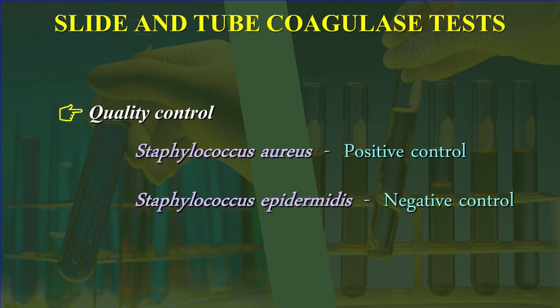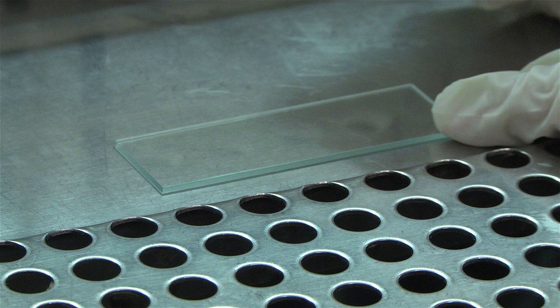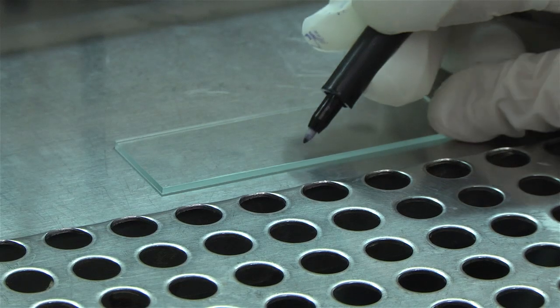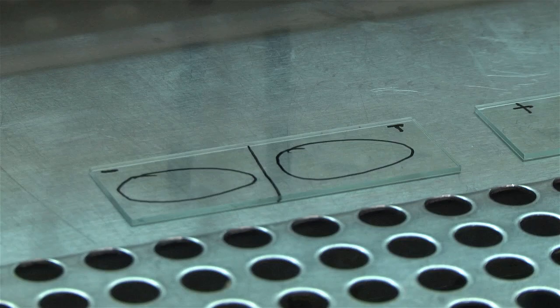Procedure for Slide Coagulase Test: Take a clean, grease-free glass slide and divide it into two sections using a glass marking pencil or a marker. Draw circles on the underside of the slide designating the area where the test will be performed. Label one section as test and the other for normal saline control. This slide is the test slide.